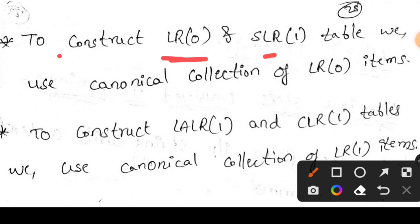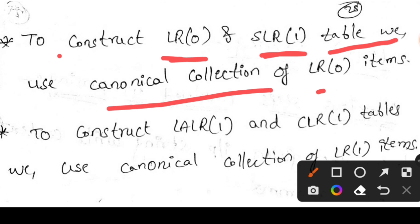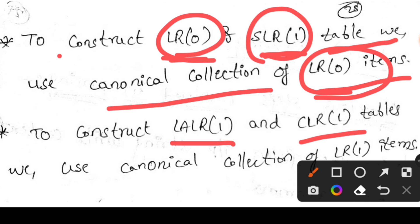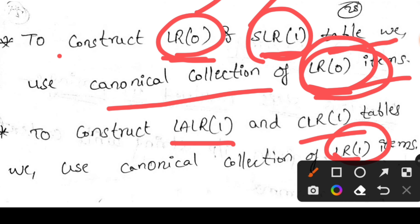To construct the LR(0) and SLR(1) parsing tables, we use the canonical collection of LR(0) items. For LALR(1) and CLR(1), we use the canonical collection of LR(1) items. So the least powerful parsers use canonical collection of LR(0) items, while the most powerful parsers — LALR(1) and CLR(1) — use canonical collection of LR(1) items. What LR(0) items and LR(1) items are will be explained in further videos.